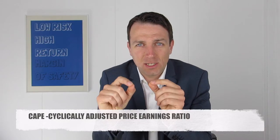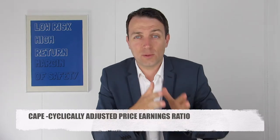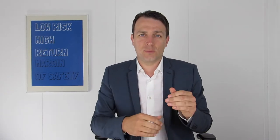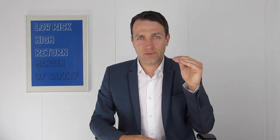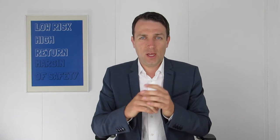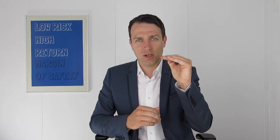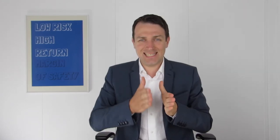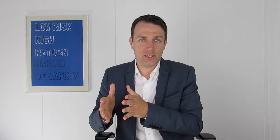That is the cyclically adjusted price earnings ratio. You have a normal price earnings ratio that compares the price of the stock and the earnings — the lower is usually the better, depending on the situation with the stock. What the cyclically adjusted price earnings ratio does is check the price of the stock, but it takes 10-year average earnings for the price earnings ratio.